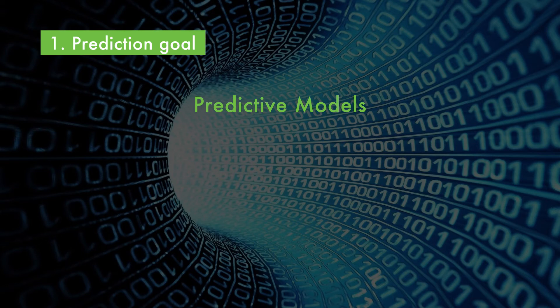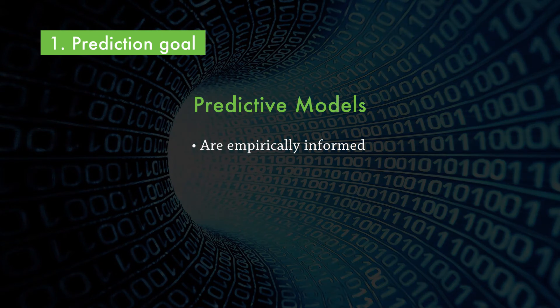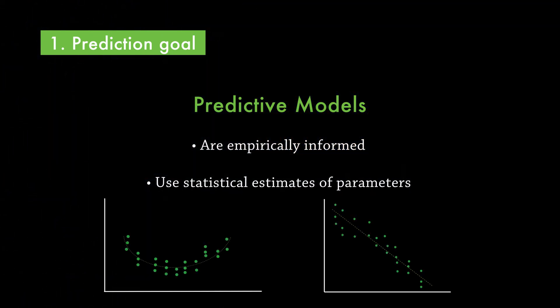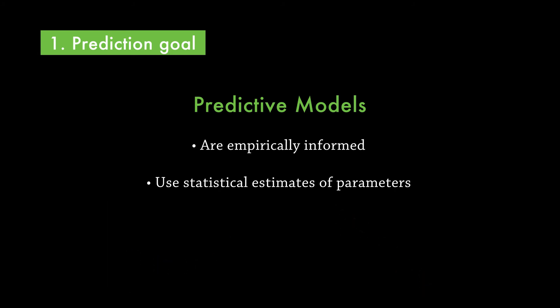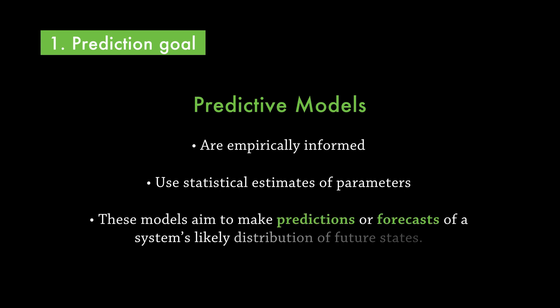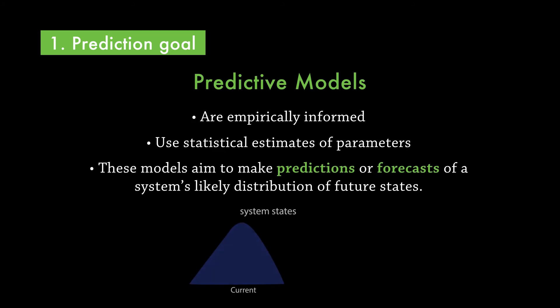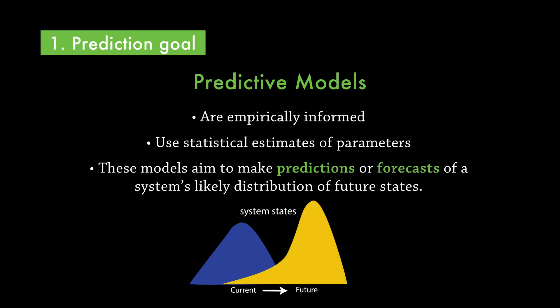Predictive models are typically empirically informed models — that is, data-oriented models. They can be statistical relationships that generate predictions, or they can be computationally intensive ones like dynamical simulation models. Unless the fundamental relationships are known, the parameters used in a model are usually statistical estimates. For example, regression coefficients are estimates of the unknown population parameters, and they describe the relationship between a predictor variable and the response. Rather than precise estimates, these models aim to make predictions or forecasts of a system's likely distribution of future states.